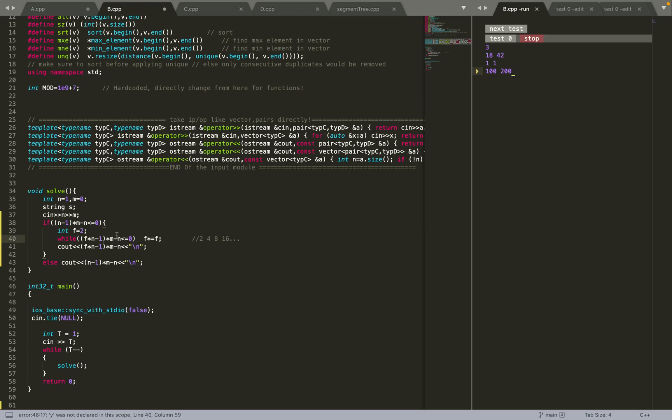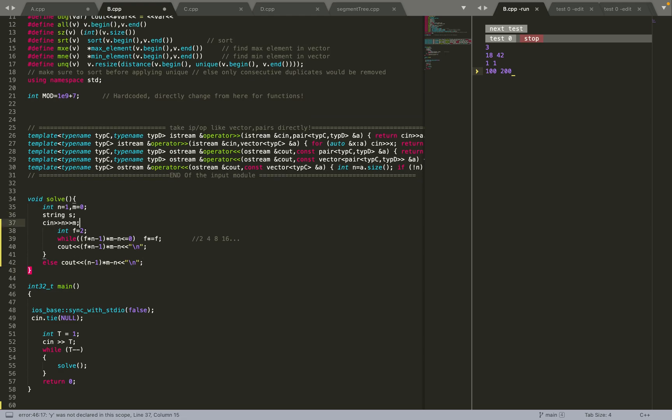As soon as it becomes greater than 0, I will print out that value. Else, if it was already greater than 0, then I will simply print out this value. It was just like 2, 3 lines of code.